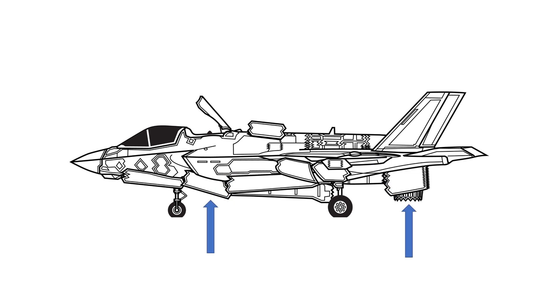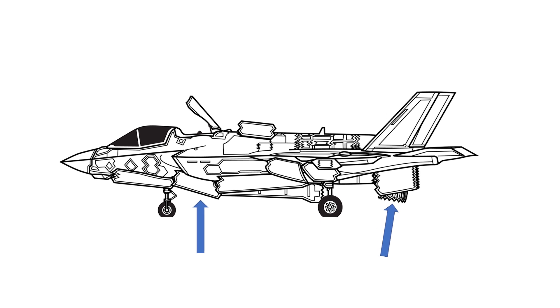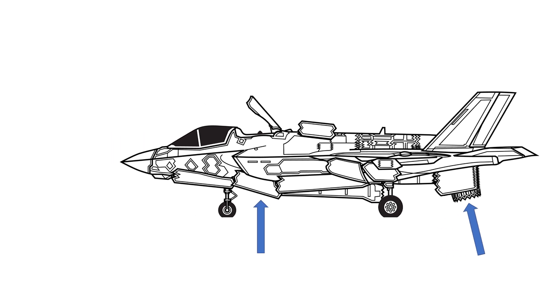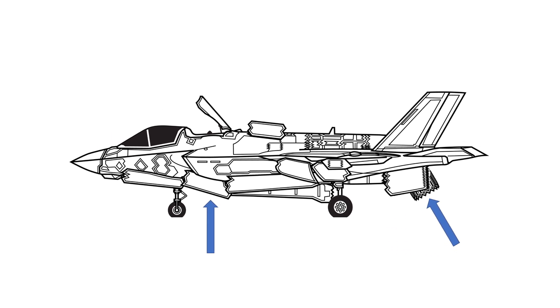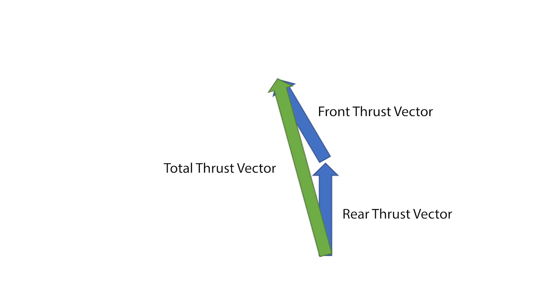Now, the nozzle tilt can be used to change the angle of the thrust vector of the rear fan, resulting in forward or backward motion even if we hold the pitch attitude level. Then we can use some simple vector math to determine the relationship between the nozzle tilt angle and the total thrust vector angle, and plug that into the flight control code.